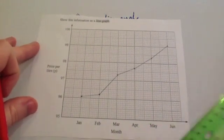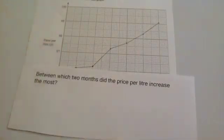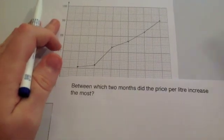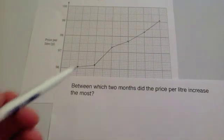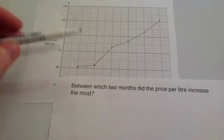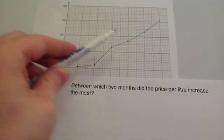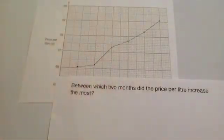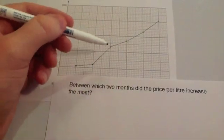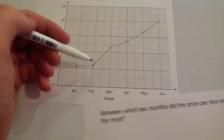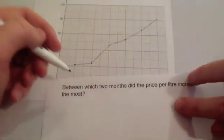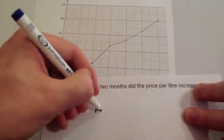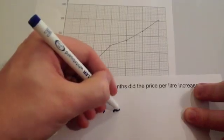Let's look at a typical question based on that. A typical question would be, between which two months did the price per litre increase the most? So we're looking for the biggest increase. If you're looking for the biggest increase in the line graph, you want to look for the steepest line segment. The steepest one I can clearly see is between these two points. So that's between February and March.